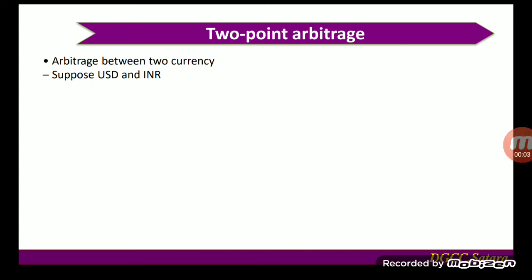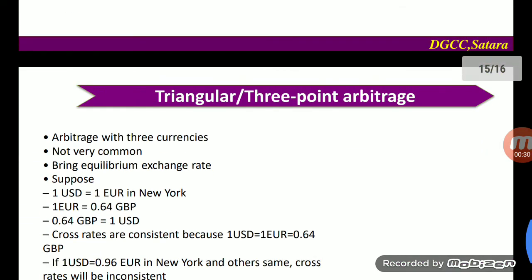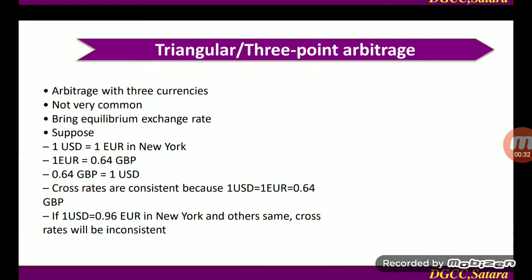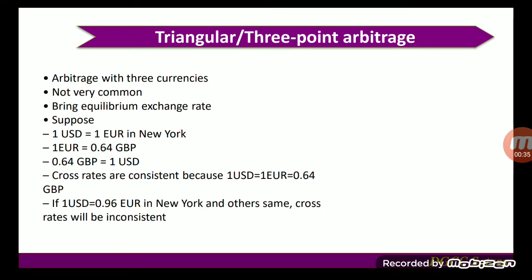Continuing our arbitrage lecture, we are discussing the types of arbitrage. The first is two-point arbitrage, which we can observe between two currencies — for example, the US dollar and Indian rupees. The second is triangular or three-point arbitrage, which involves three currencies.